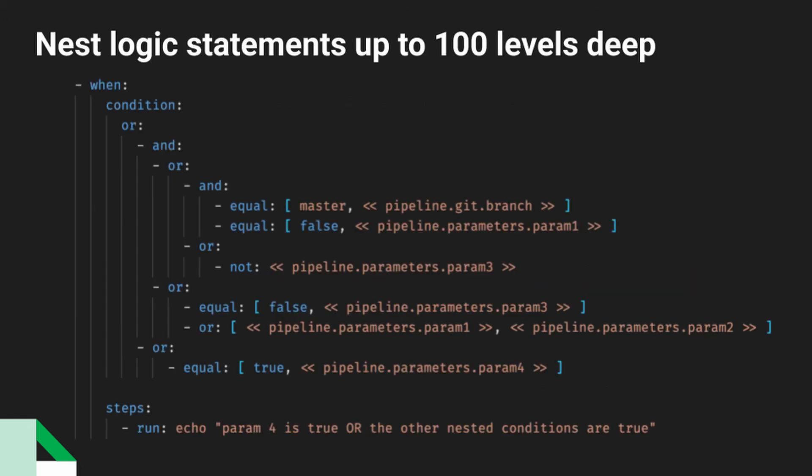As I showed you before, you can use very simple logic statements, or they can grow to be as complex as you need them to be. They can be nested up to 100 levels deep. So you can see here that we're using a mix of everything all together, and it will evaluate at the very top level to either a true or false statement. And that will dictate when workflows run and when job steps run on CircleCI.